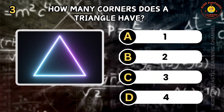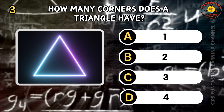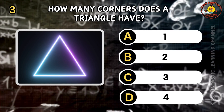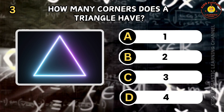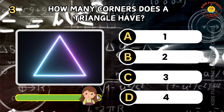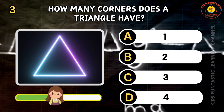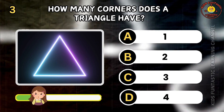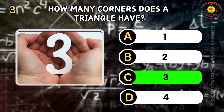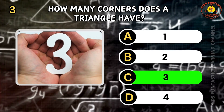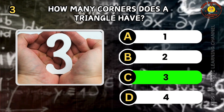Question 3. How many corners does a triangle have? A: 1, B: 2, C: 3, D: 4. You're really sharp! The correct answer is C. A triangle has three corners.